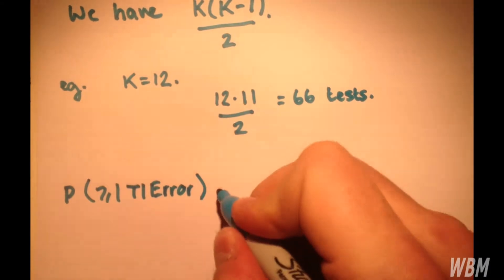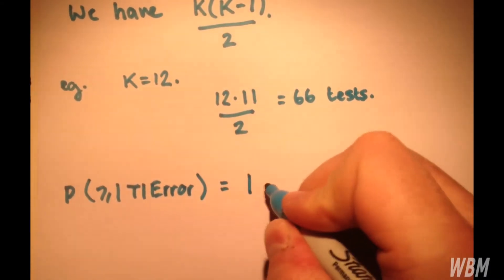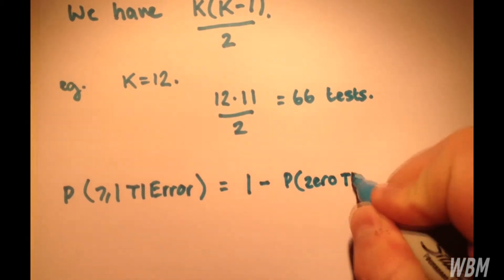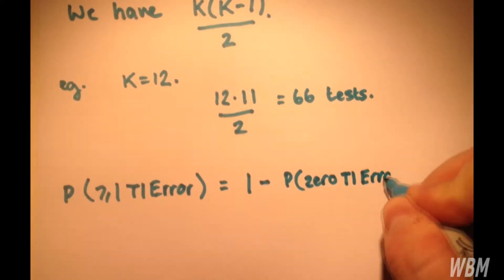Well, we can look at that backwards and say it's equal to 1 minus the probability that we get 0 type 1 errors.